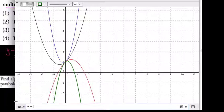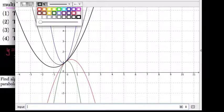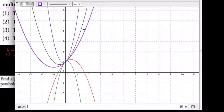So for example, if I had 0.5x squared, so if I multiply by 1 half, watch what happens here. This time I get a much wider parabola. So this one, I'll change the color to, say, purple.